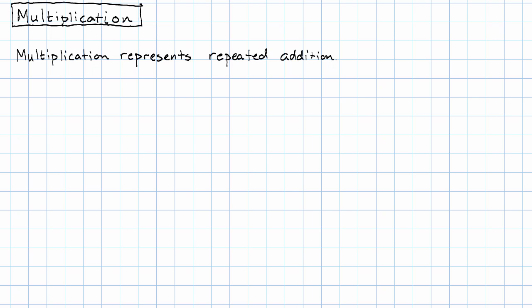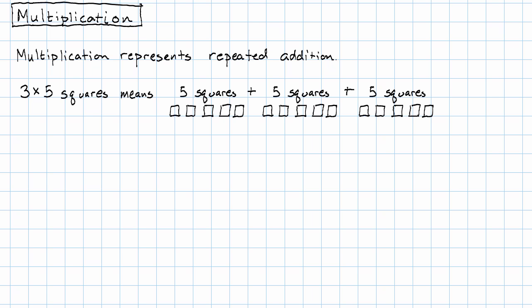Multiplication represents repeated addition. What do I mean by that? I mean 3 times 5 squares means 5 squares plus 5 squares plus 5 squares. That is, it means 5 added to itself 3 times.